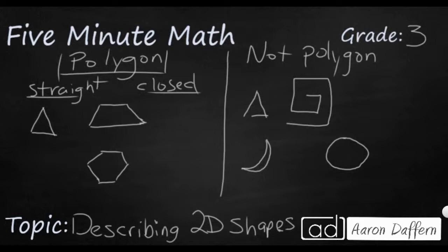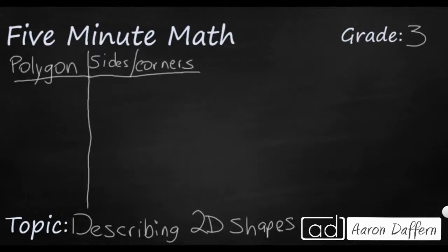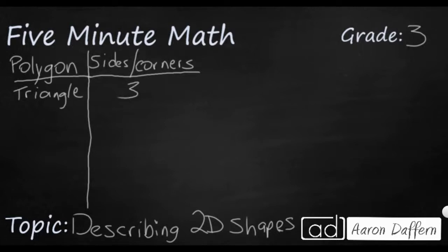Now let's look at some different types of polygons and how we can describe them by using the number of sides and corners that they have. Notice I'm going to put both of those together. A triangle is a pretty simple one — it has three sides and three corners.